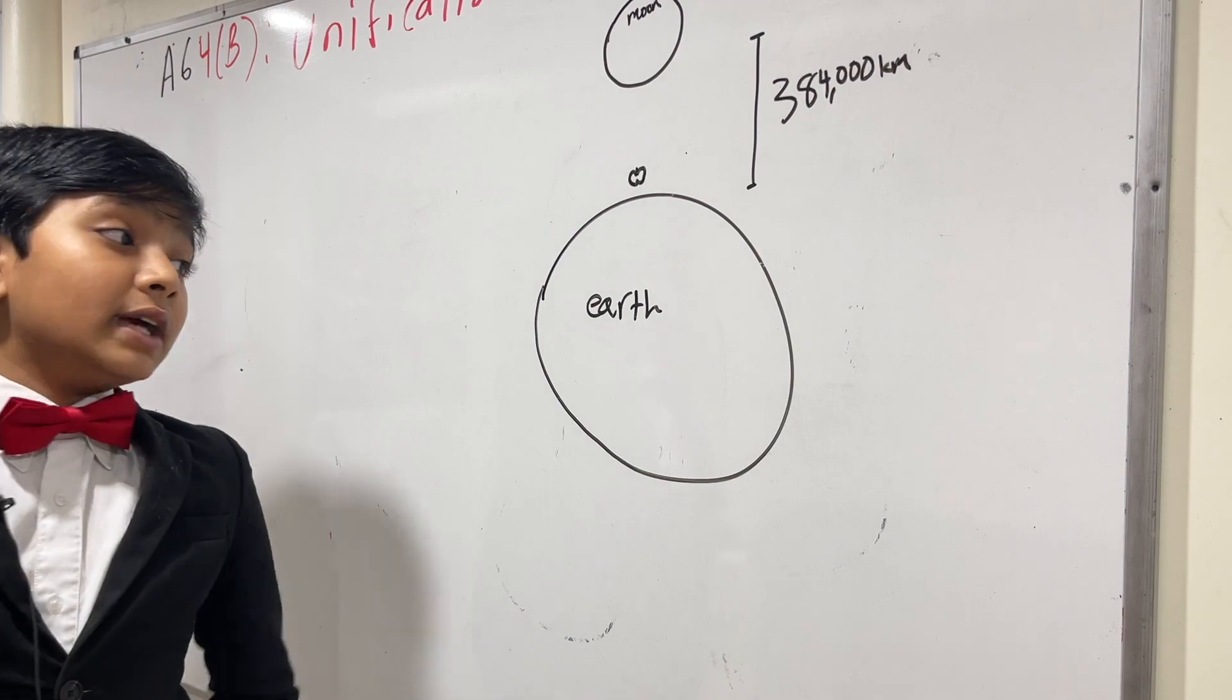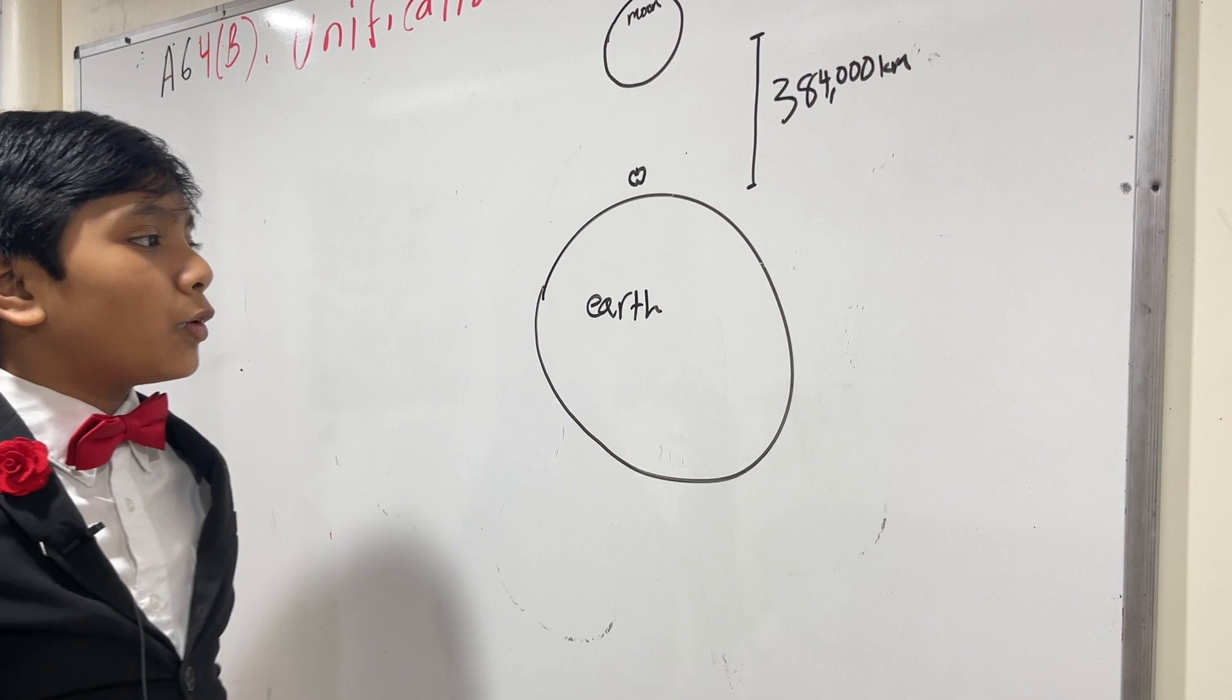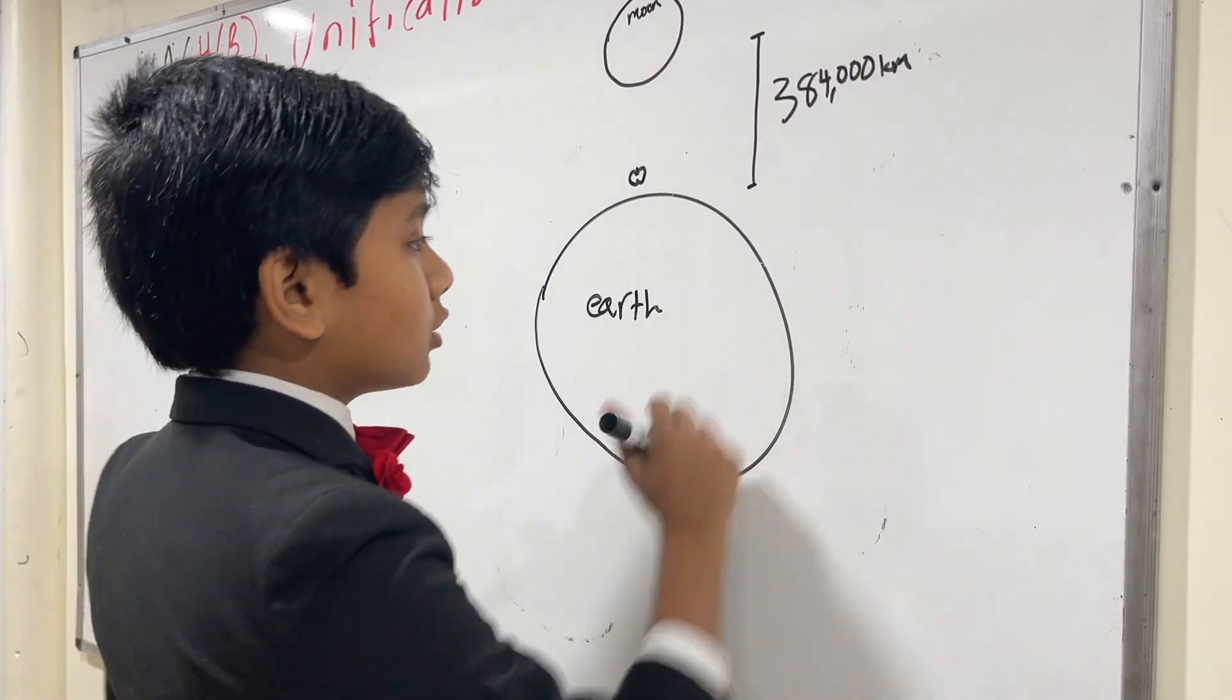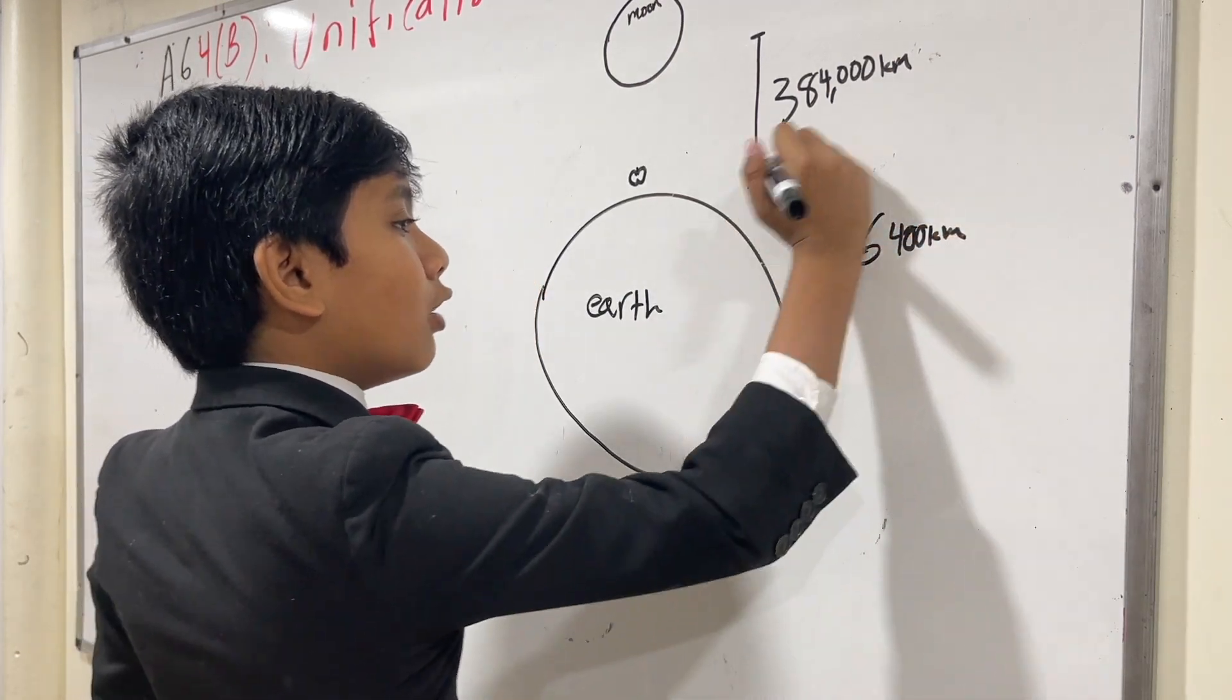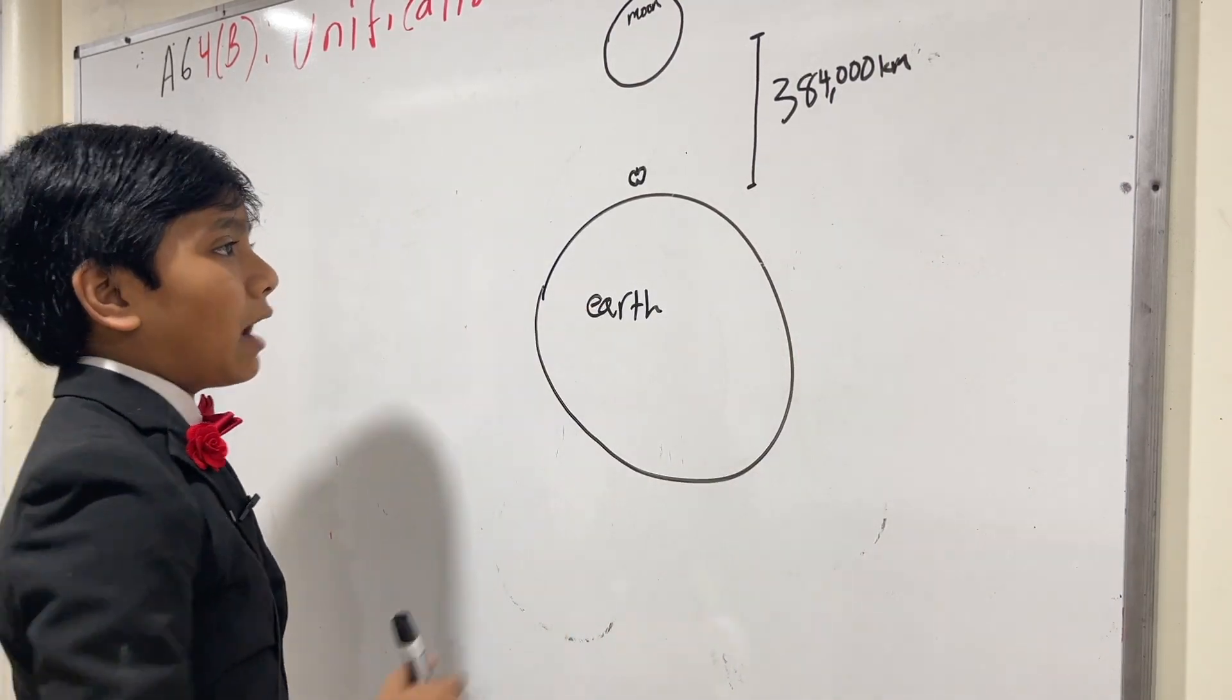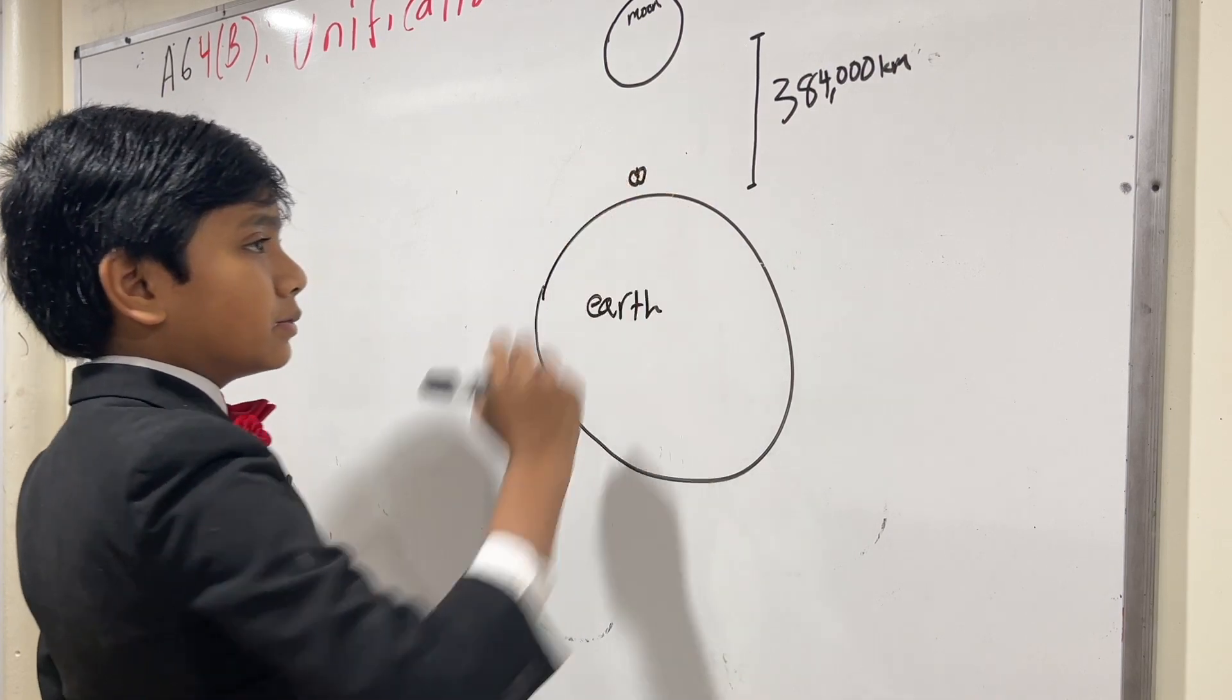Now, obviously, if I drew this to scale, then the moon would go way off the whiteboard. But for our purposes, this is how it's going to look like. This is just a reminder that this is only 6400 kilometers. So let's think about it.